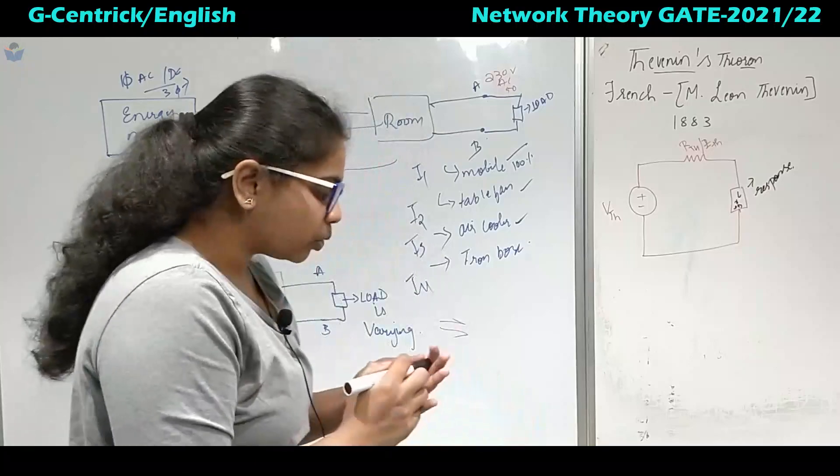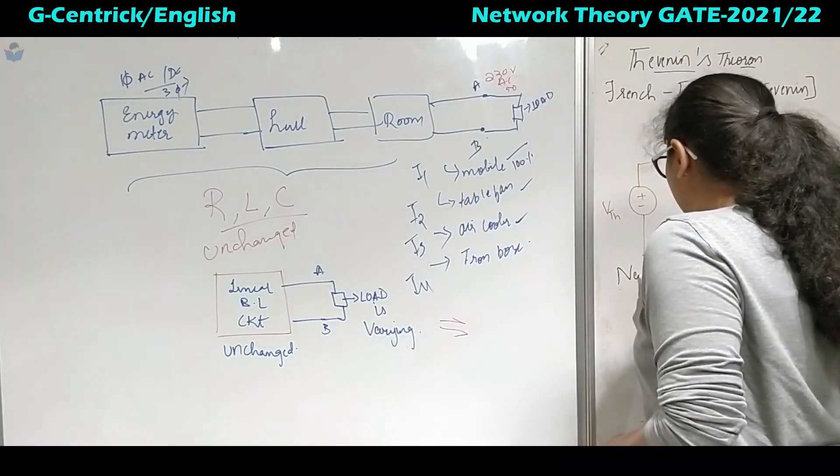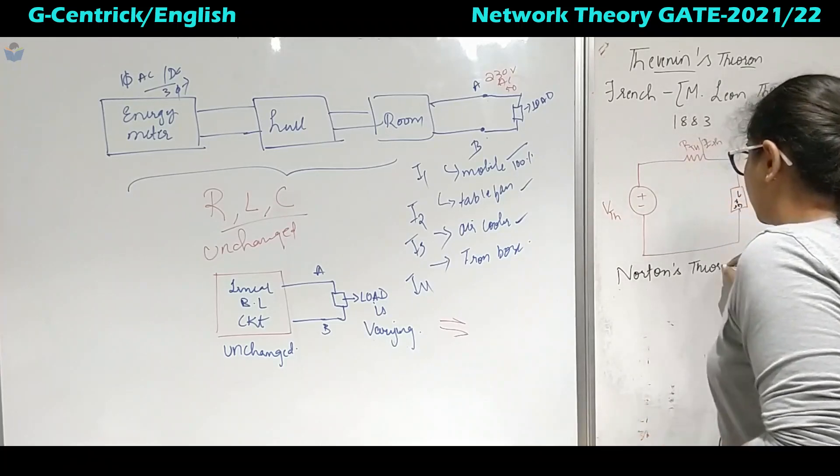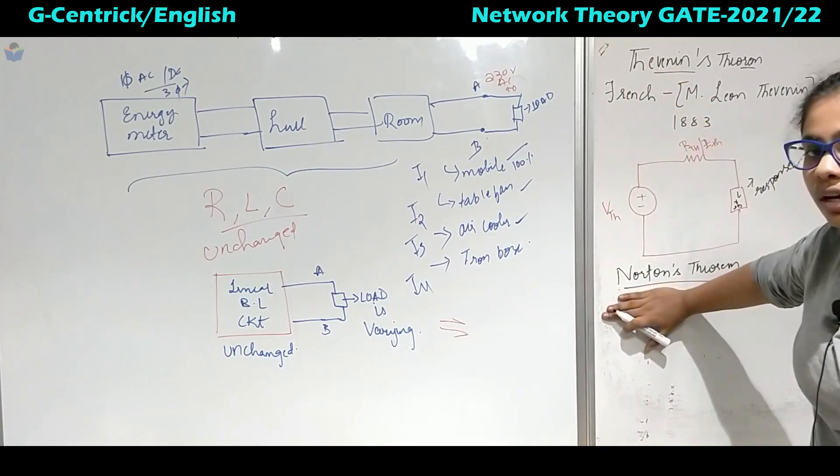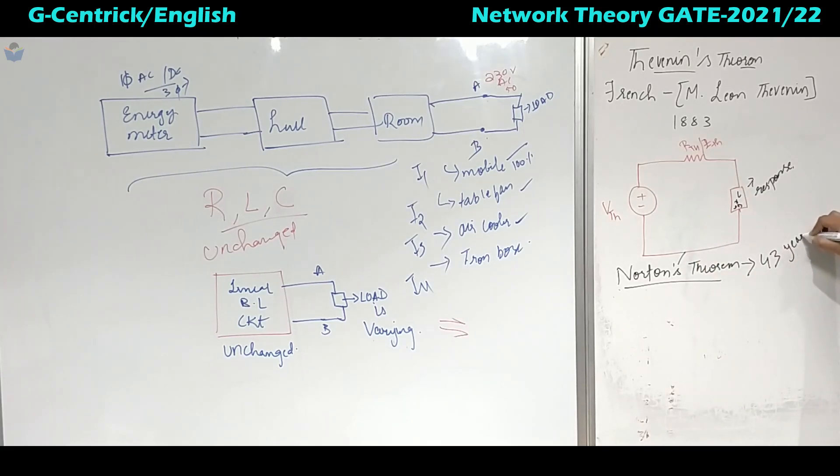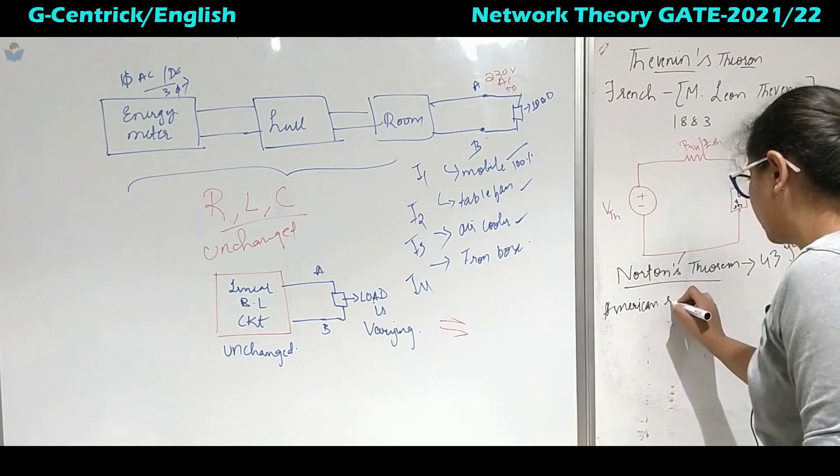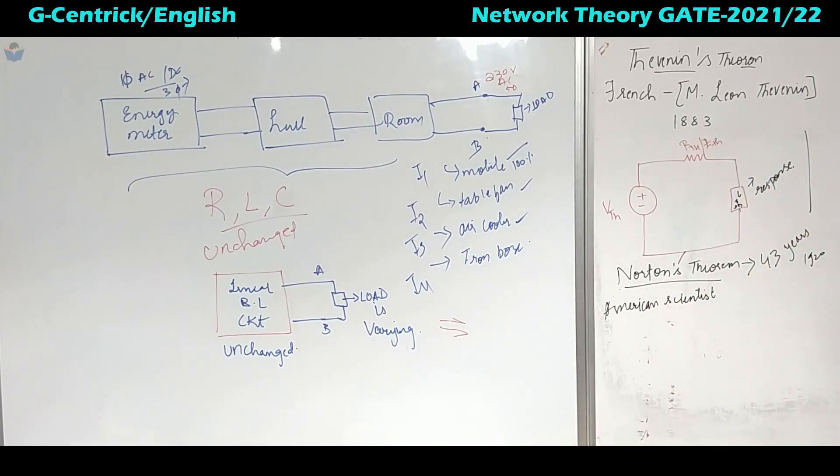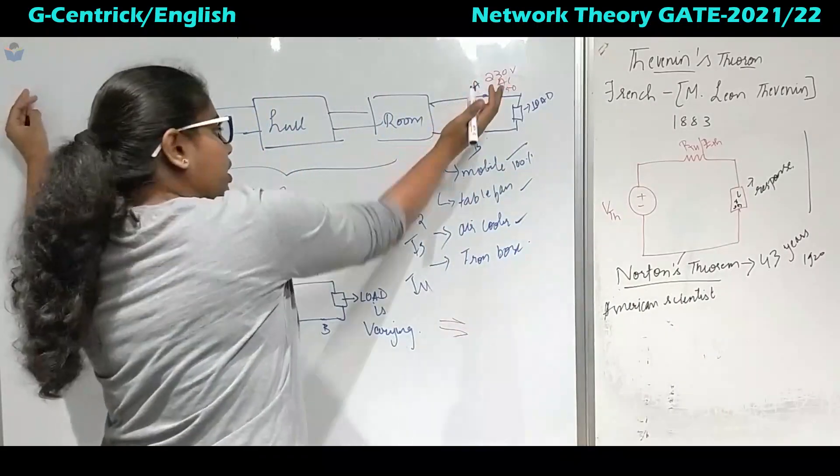Now there is one more concept due to this Thevenin's theorem which was given by Norton. It was given by, we will study this Norton's theorem. Then from the after studying this, because they are like you know brother and sister, it's like dual. Whatever is there in Thevenin, it is with the dual of the Thevenin's theorem that we will call it as Norton's theorem. What did Norton did is, this was discovered after 43 years later, 1883, almost approximately in 1920. Norton, he was an American scientist. He had given this theorem.